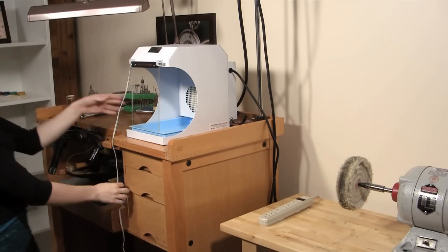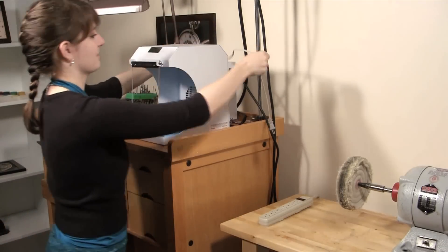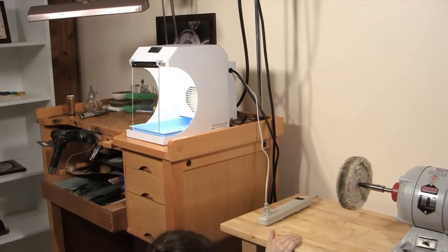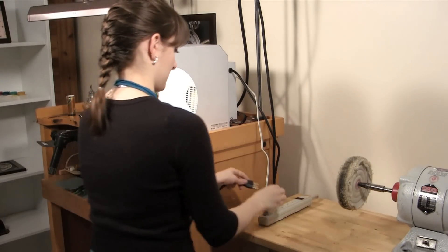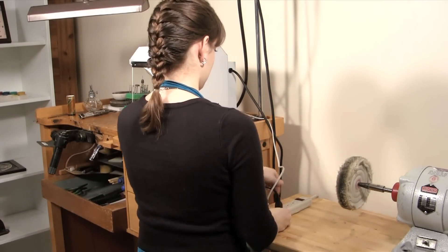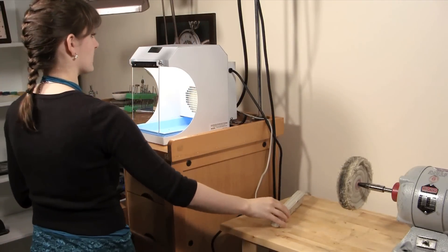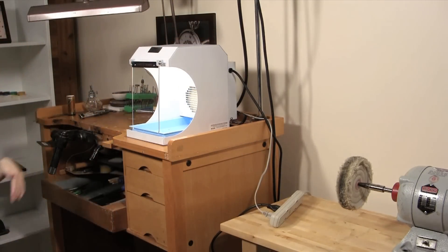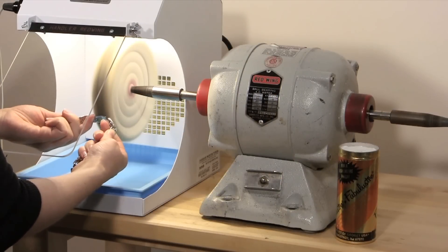It is even ready to use straight out of the box. Simply hook up the light, plug it in, and start polishing. Let the dust collector filter all of the metal particles out of the air.